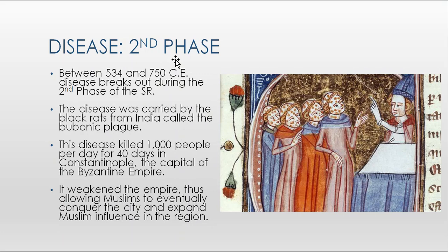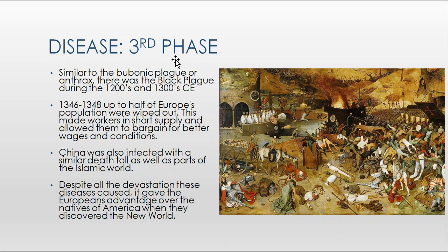The second phase of disease occurred around 534 to 750 CE, during the Tang dynasty's reign over China. The disease was carried by black rats from India — the bubonic plague. It killed a thousand people per day for 40 days in Constantinople, the capital of the Byzantine Empire, weakening that empire and allowing Muslims to eventually conquer the city and expand Muslim influence into the region.